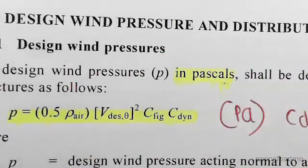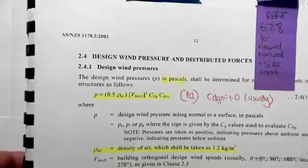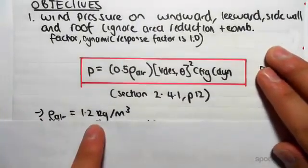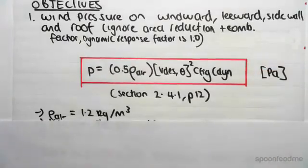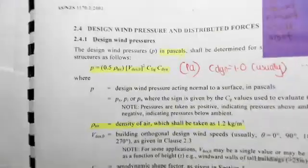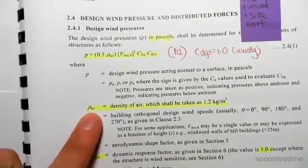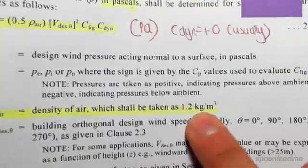We're just going to write down some values that we know using this formula. We know that the density of air is 1.2 kilograms per meter cubed. That's given just below it - the density of air shall be taken as 1.2 kilograms per meter cubed.